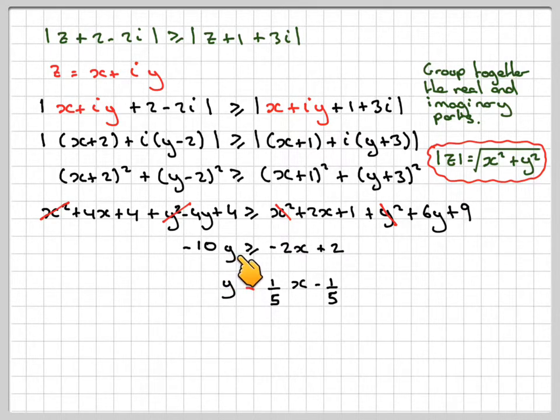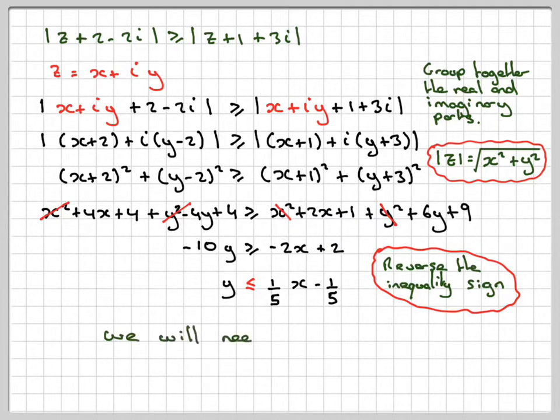When you divide by a negative sign in an inequality, the sign needs to be changed. So we're going to get -2 over -10, which is 1/5, and then 2 over -10, which is -1/5. Don't forget, the inequality sign must be reversed at that point. We will need to draw the line y = (1/5)x - 1/5.